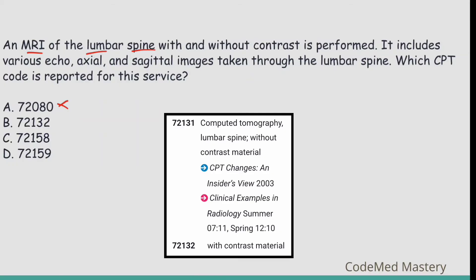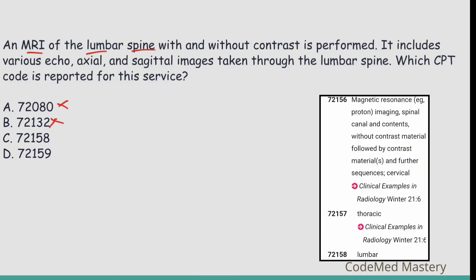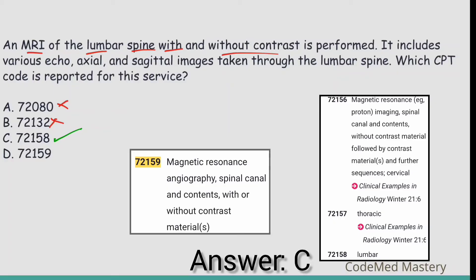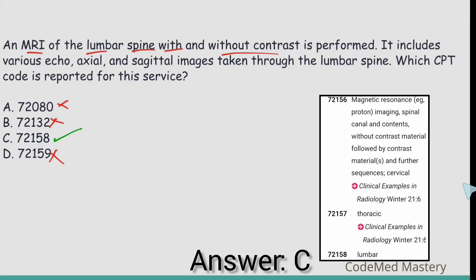Option B: 72132 — computed tomography, lumbar spine, with contrast material. The scenario involves MRI, not CT, and it is with and without contrast, so eliminate option B. Option C: 72158 — magnetic resonance imaging, spinal canal and contents, without contrast followed by contrast materials and further sequences, lumbar. This matches the scenario: MRI of the lumbar spine with and without contrast. Option D is for magnetic resonance angiography, not MRI, so eliminate option D. The right answer is option C: 72158.